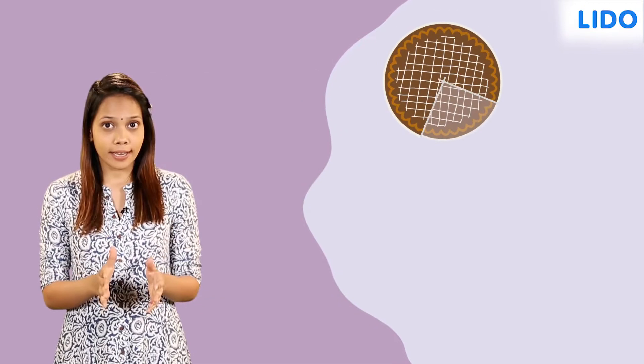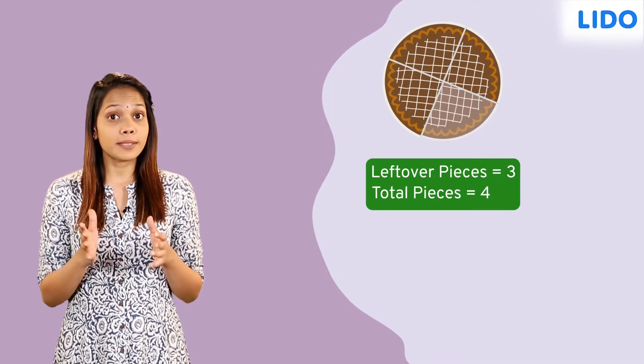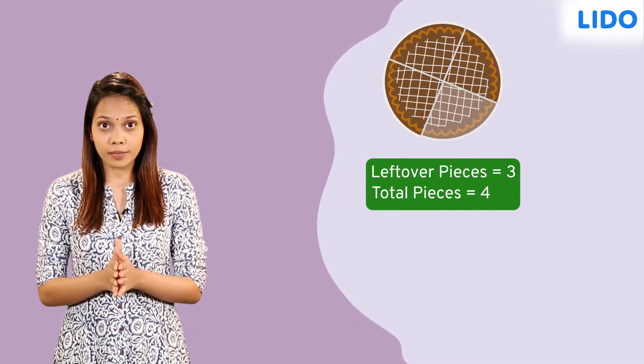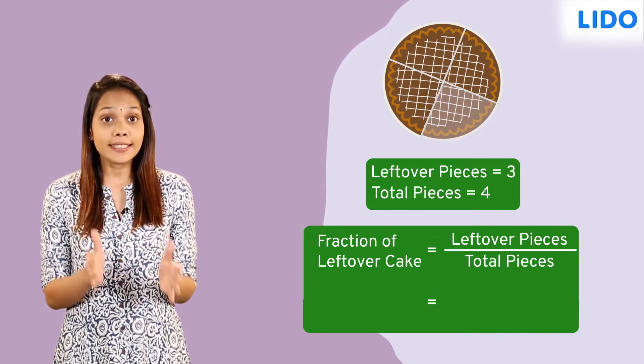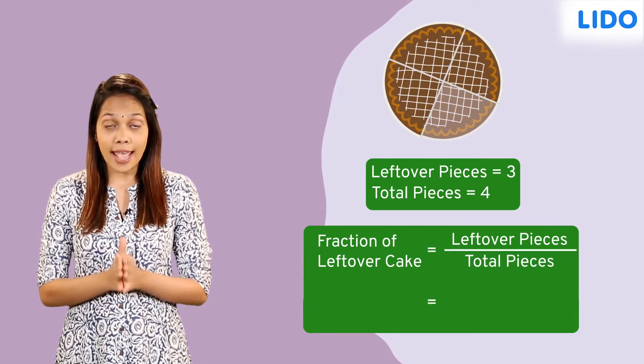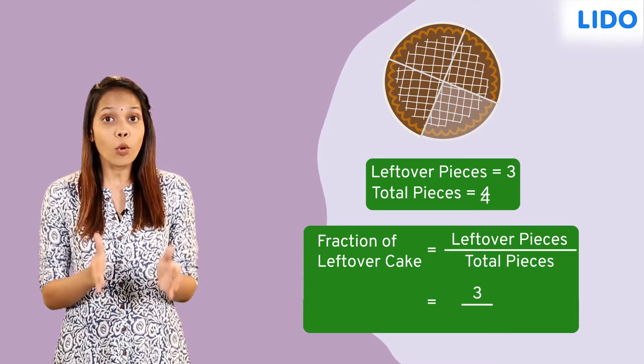Let's express the remaining cake in each case as a fraction so we can compare and decide which of the two has more left. The chocolate cake has 3 out of 4 pieces remaining. In fraction form, this can be written as 3 over 4.